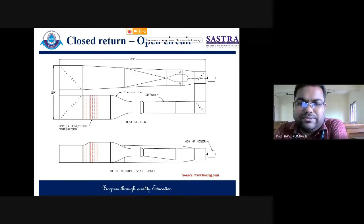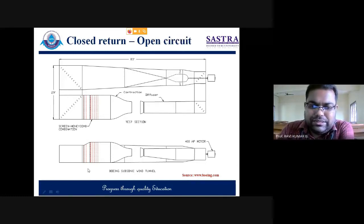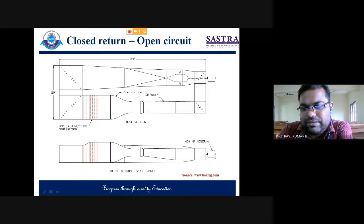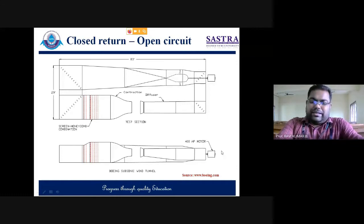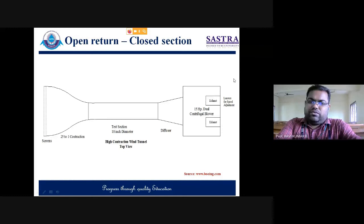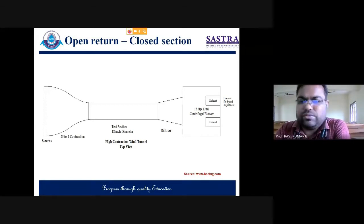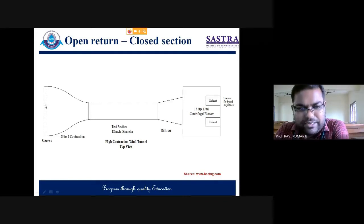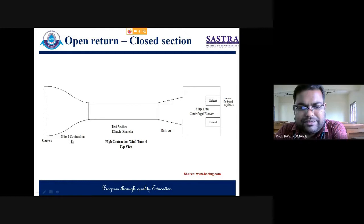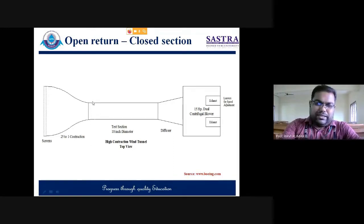In this closed return tunnel, air that has already been generated inside circulates throughout the section. This is the side view of the same tunnel — showing the test section, convergent portion, divergent portion, and the 400 horsepower motor. The second type is the open return tunnel, where an opening allows air to be sucked in or blown out — two kinds exist: suction type and blowing type. Here a 15 HP dual centrifugal blower blows the air. The test section is tubular with an 18-inch diameter. The contraction ratio is 25:1.6, which is the exit area to throat area ratio.